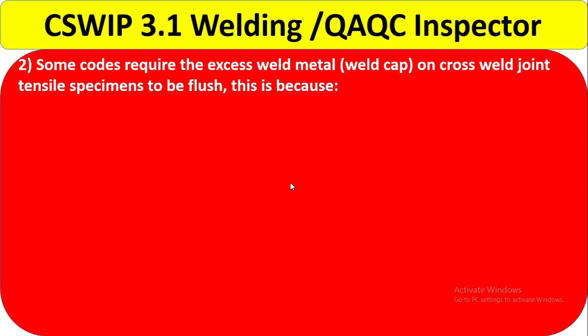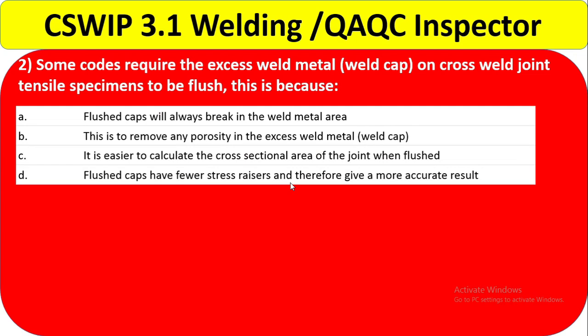Question 2: Some codes require the excess weld metal (weld cap) on a cross-weld joint tensile specimen to be flushed. Why? Option A — flux caps will always break in the weld metal area — is incorrect; that is not always the case. Option B — to remove any porosity in the excess weld metal cap — is also not correct, because if porosity is found you would need to redo the welding.